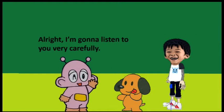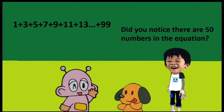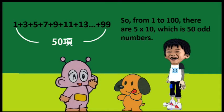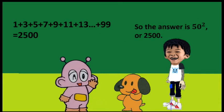I'm going to listen to you very carefully. Do you notice there are 50 numbers in the equation? From 1 to 10, there are 5 odd numbers. So from 1 to 100, there are 5 times 10, which is 50 odd numbers. So the answer is 50 squared, or 2500.